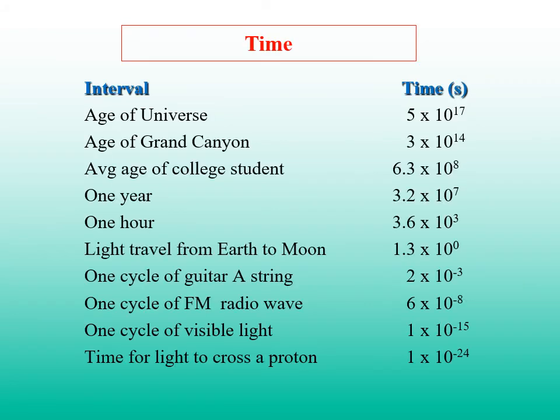For time scale, 1 hour equals to 3.6 times 10 to 3 seconds. 1 year has 3.2 times 10 to the power of 7 seconds. Light travels from earth to moon in 13 seconds. The age of universe is 5 times 10 to the power of 17 seconds, equals to the order of 10 to the power of 10 years. Though the Bible tells us God Jehovah created the world 6,600 years ago.